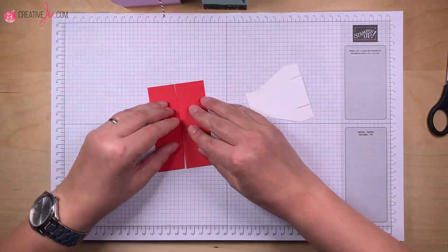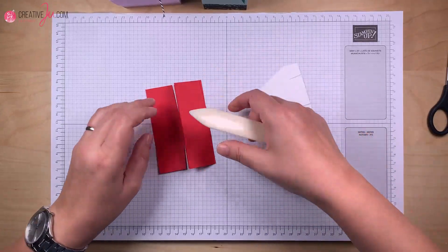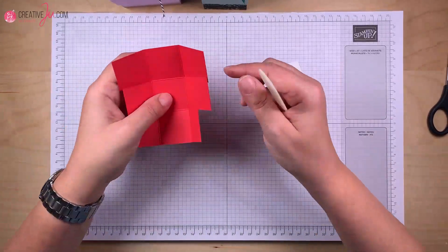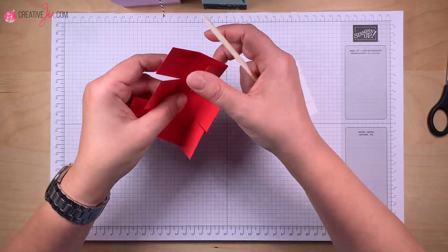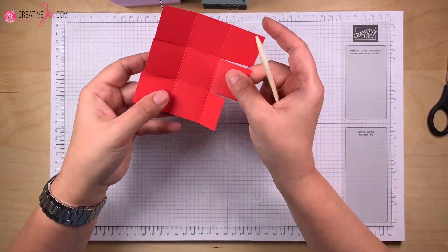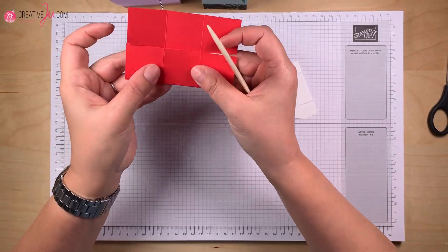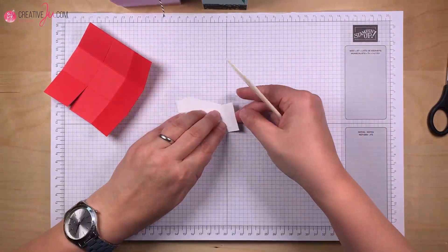Erstmal knicken wir natürlich alles durch und gehen dann mit einem Falzball drüber. Dabei immer achten, dass alle Linien übereinander liegen. Also hier die Kanten und hier die Falzlinien. Und hier natürlich auch. Und bei dem Deckel machen wir das Gleiche.